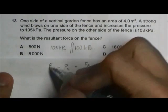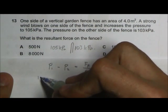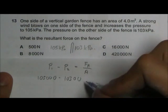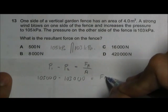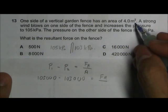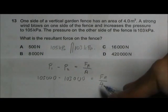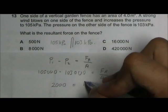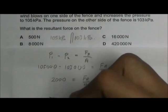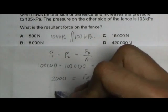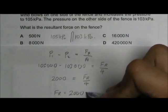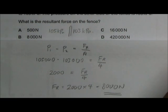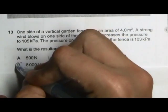So we have 105,000 pascal minus 103,000 pascal is equal to resultant force divided by the area in meter square, which is 4. So now we have 2,000 is equal to resultant force divided by 4. And we can say that the resultant force is equal to 2,000 times 4, which is 8,000 newton. So the answer should be B.